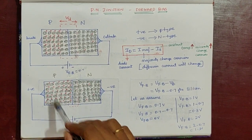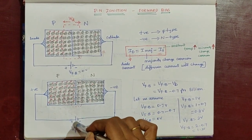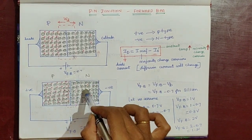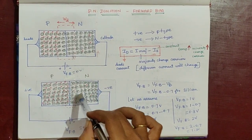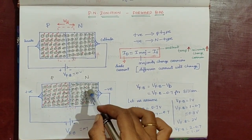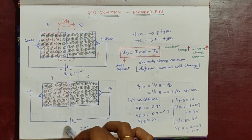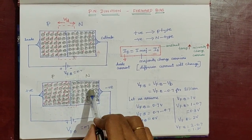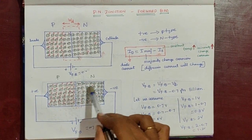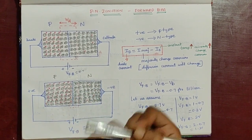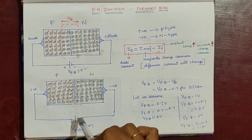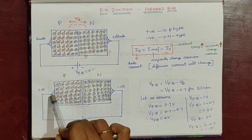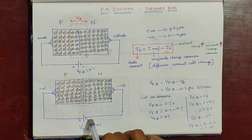Under forward bias, holes are positively charged and the positive terminal of the battery repels them toward the junction. The majority charge carriers — electrons in N-type — are attracted toward the P-type by the positive terminal of the battery. The negative terminal connected to the N-type repels electrons into the junction. At the same time, holes in P-type are attracted by the negative terminal. So electrons move from N to P and holes move from P to N — this is the forward bias current flow.